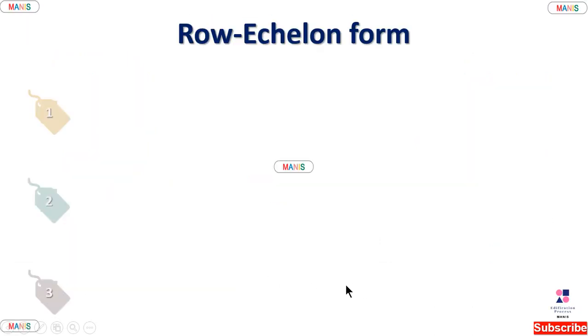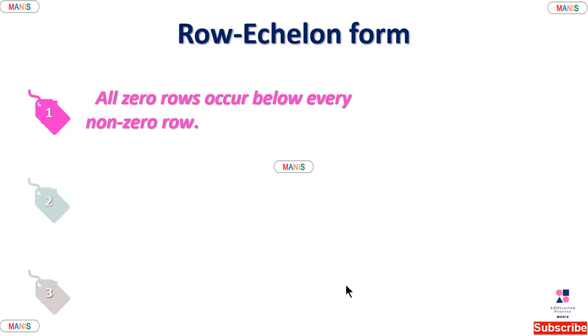The third term is row echelon form. It has three parts. The first one: all zero rows occur below every non-zero row.